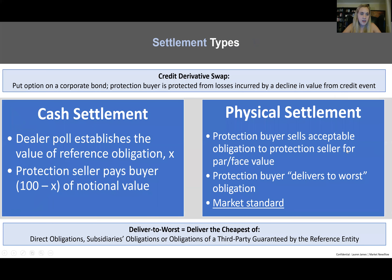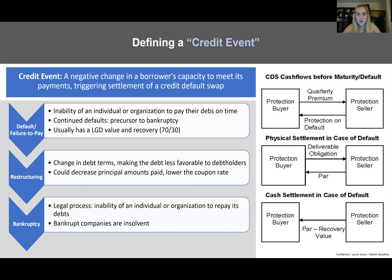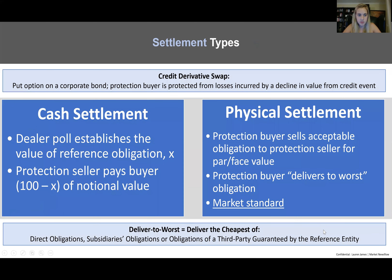For cash settlement, a dealer poll establishes the value of the reference obligation — that is the recovery value. Dealers are sell-side institutions like Citibank that make markets on products similar to the reference entity. Once the dealer poll is established, you know what the recovery value is and can settle the difference.